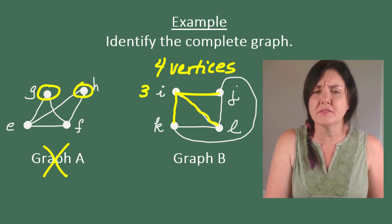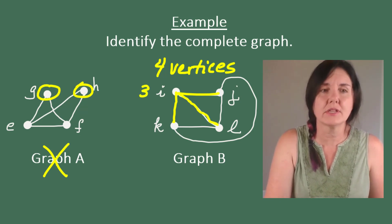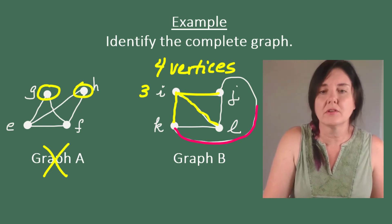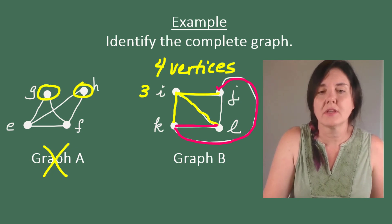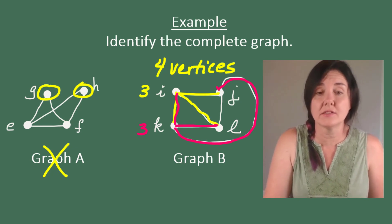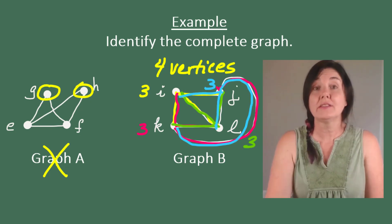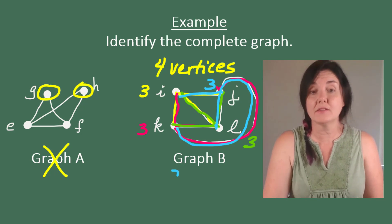Let's check the other vertices. Let's look at vertex K. Vertex K is also connected to three other vertices, J, L, and I. It has degree three. Similarly for vertex L and for vertex J. So that's another indication that this graph B is a complete graph.